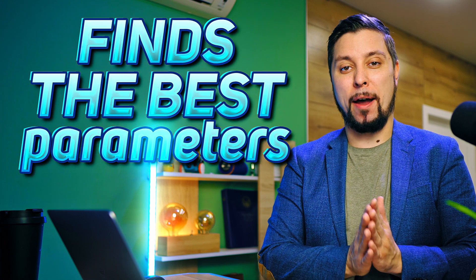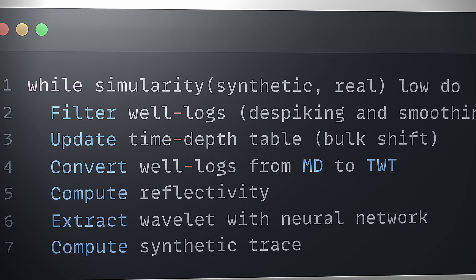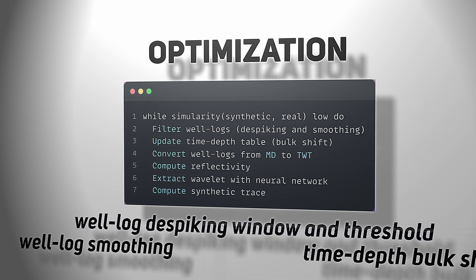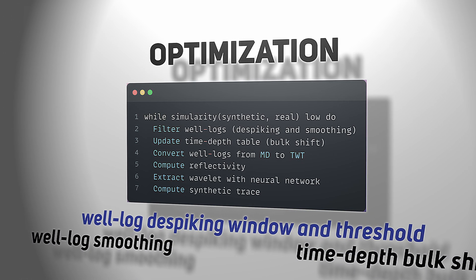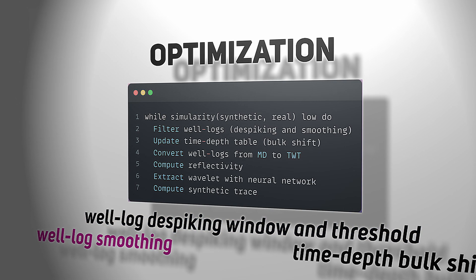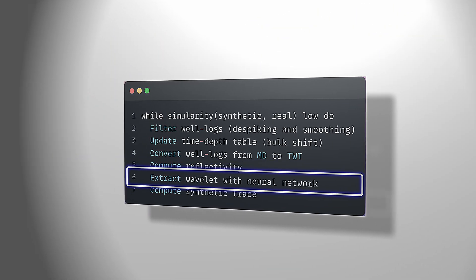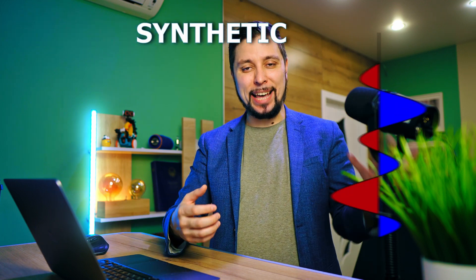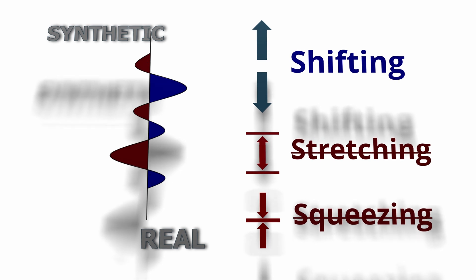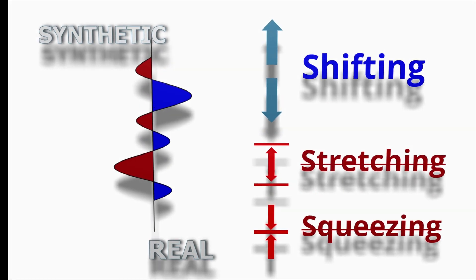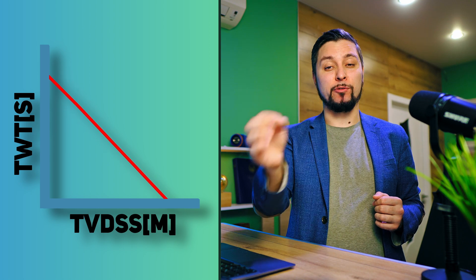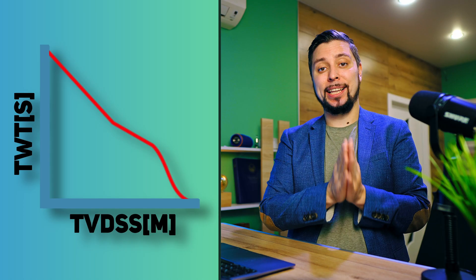The second part is Bayesian optimization, which finds the best parameters for the seismic to well alignment. They define a simple four-dimensional parameter space: the spiking window and threshold, the Gaussian smoothing kernel standard deviation, and the time-to-depth bulk shift. The network computes the extracted wavelet, and the optimization objective is to minimize the difference between the synthetic and real seismic. Note that this process does not account for non-linear shifting — it moves all points by a constant value. The stretch-and-squeeze method introduces non-linearity in the time-depth table.